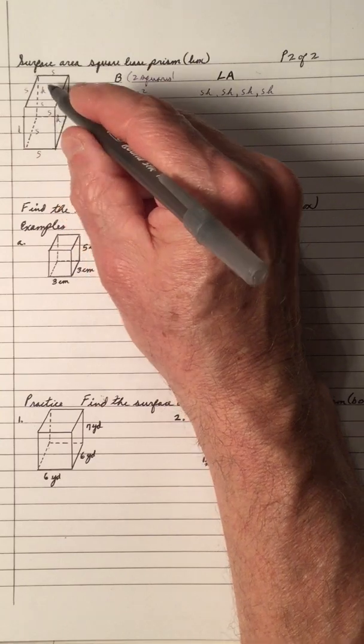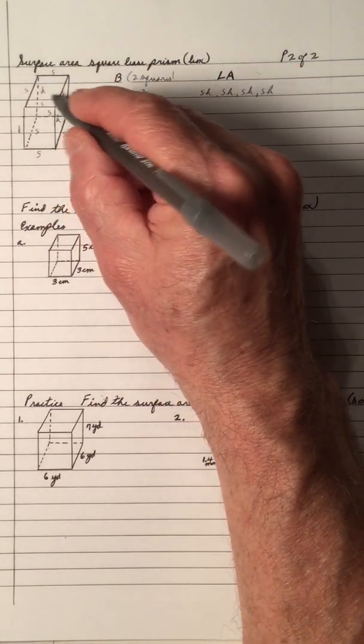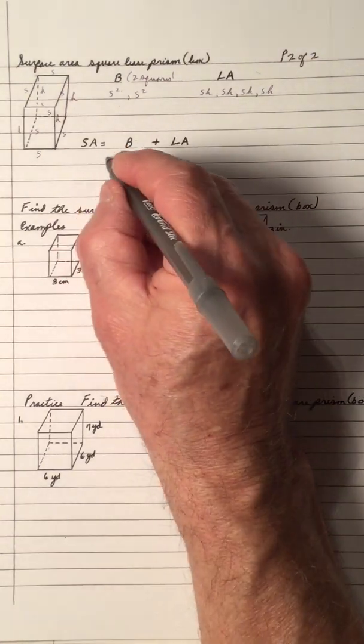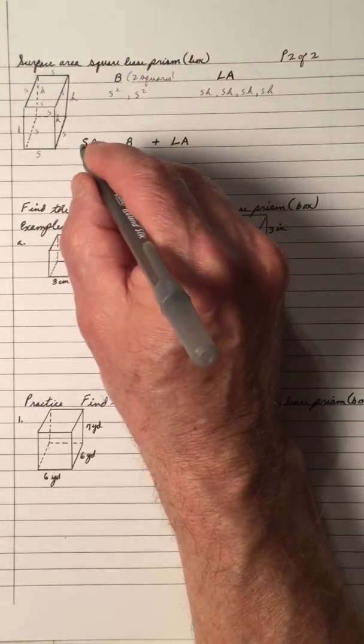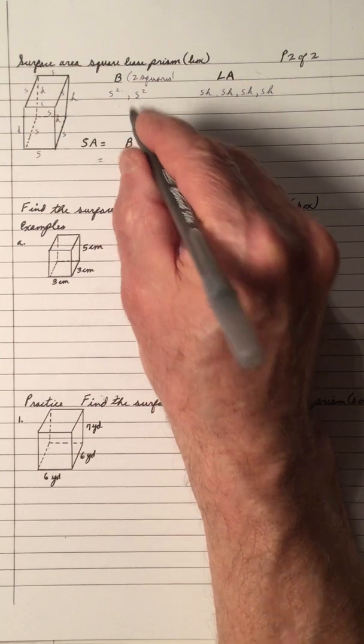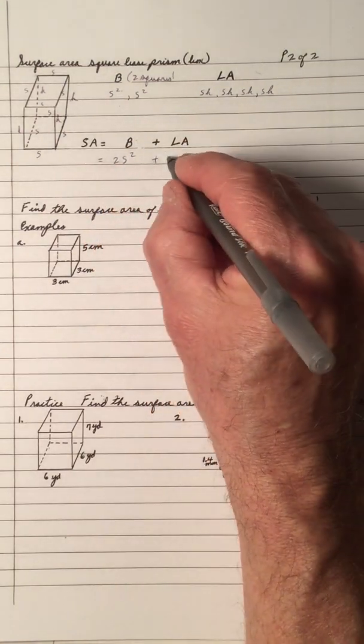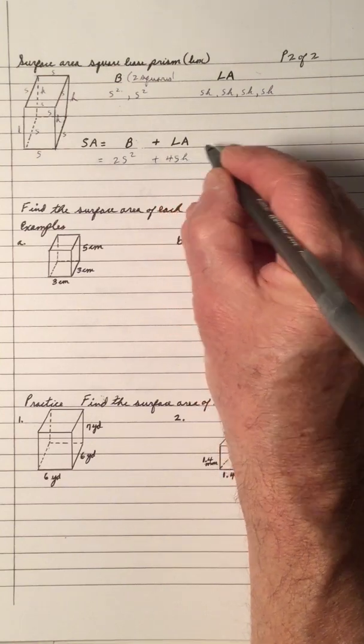So every lateral area here, all the faces are the same dimensions, which means that the surface area, SA, is 2S squared plus 4SH.